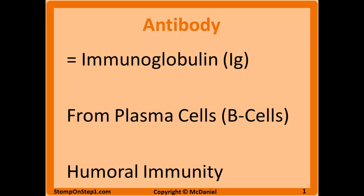Antibodies have a variable region that recognizes specific characteristics on pathogens called epitopes or antigens. Antibody can be secreted as free-floating antibody or can be bound to the plasma membrane of the plasma cell to act as the B cell receptor.